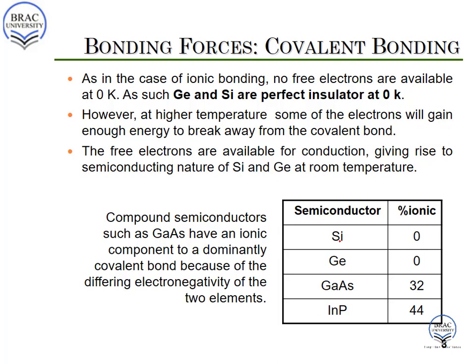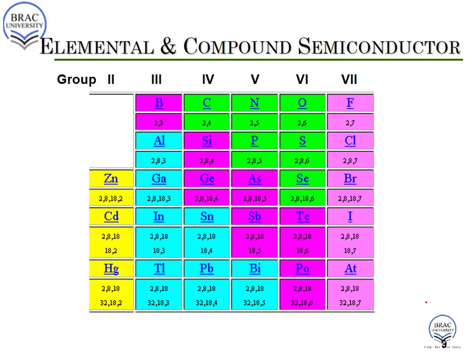Silicon and germanium are purely covalent semiconductors. But if we consider compound semiconductors like gallium arsenide, they have some ionic character. From the chart, gallium arsenide has 32 percent ionic percentage, because the electronegativity of the two elements is not the same. In this chart, the semiconductors are marked in violet — you can see silicon, germanium, and arsenic listed there. Do not confuse them with the pink color, which represents halogens. The violet elements are all semiconductors.